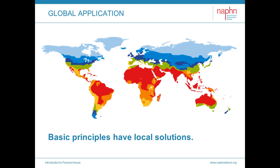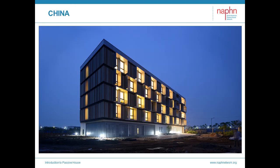This methodology has global applicability. It is being applied all over the world and the basic principles have local solutions. We are grappling with global crises and we can all work together around the world learning from each other to address them. Let's end with another look at a great variety of passive house buildings underway. In China, passive house is exploding — here is an example of a guest hotel for a company south of Beijing.